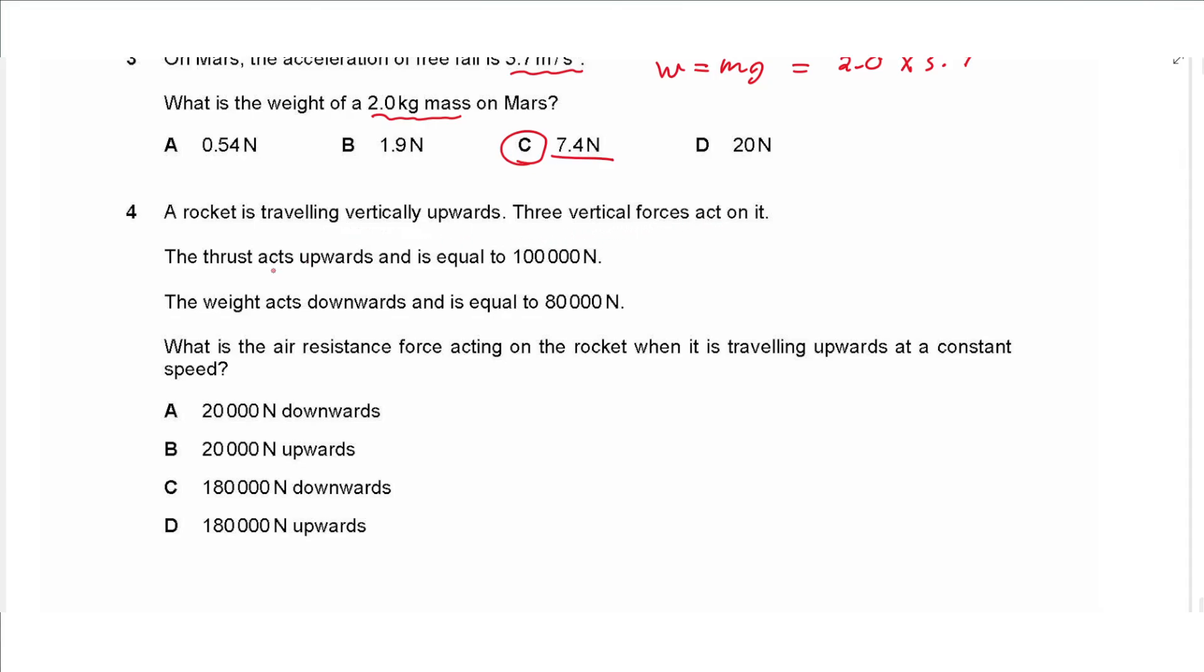Question four says a rocket is traveling vertically upwards. Three vertical forces act on it. The thrust acts upwards and is equal to 100,000 newtons, so we have an upward force 100,000 newtons. And the weight acts downwards and it is equal to 80,000 newtons. And there is a third force. What is the air resistance force acting on the rocket when it is traveling upwards at constant speed? For constant speed the forces must balance, so we need an extra 20,000 newtons downwards so that 20,000 plus 80,000 will be equal to the 100,000 upwards. So it is 20,000 newtons and it acts downwards, so we choose A.